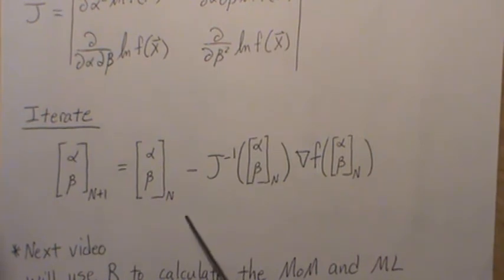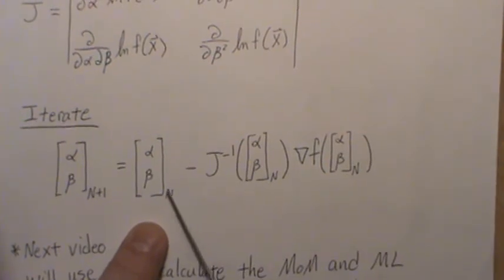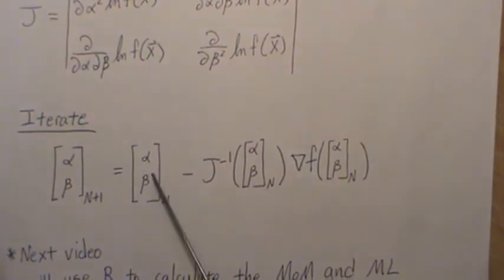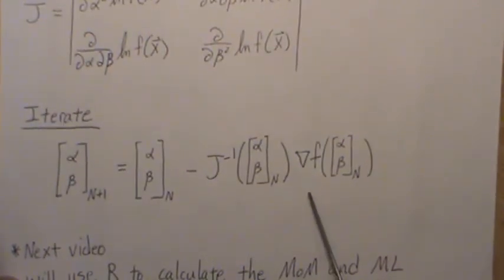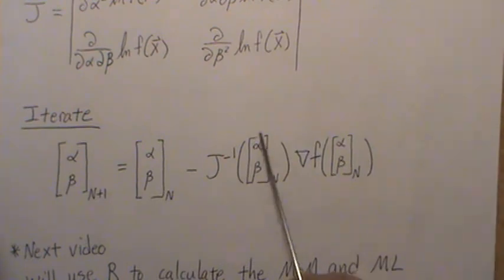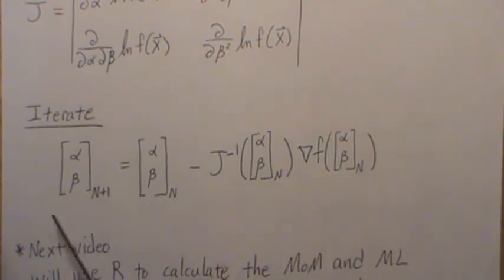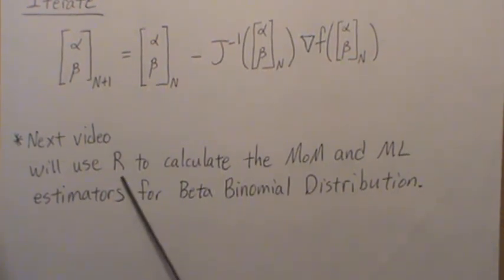To find the maximum likelihood estimate it's an iterative process. We need an initial guess for both alpha and beta. What I like to do is plug in the method of moments estimate because it's fast and easy, and then iterate from that point. This is the initial guess: it's the inverse of the Jacobian with the initial guess plugged in, times the partial of the log likelihood with our point plugged in. We calculate this, get a new point, treat that as our current point, plug it back in, get another new point, and iterate until convergence. That's the maximum likelihood estimate.